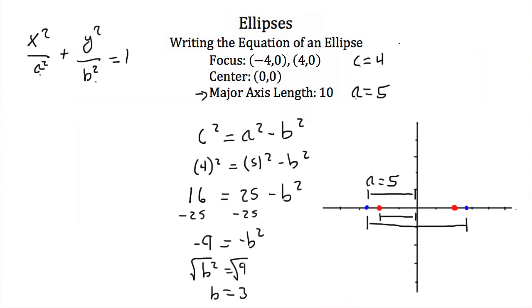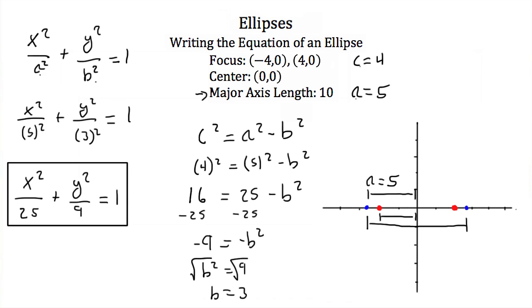So my equation then if I plug in a and b would be x squared over 5 squared plus y squared over 3 squared and that's equal to 1. Simplify and we have x squared over 25 plus y squared over 9 is equal to 1. That is the equation of our ellipse in standard form.